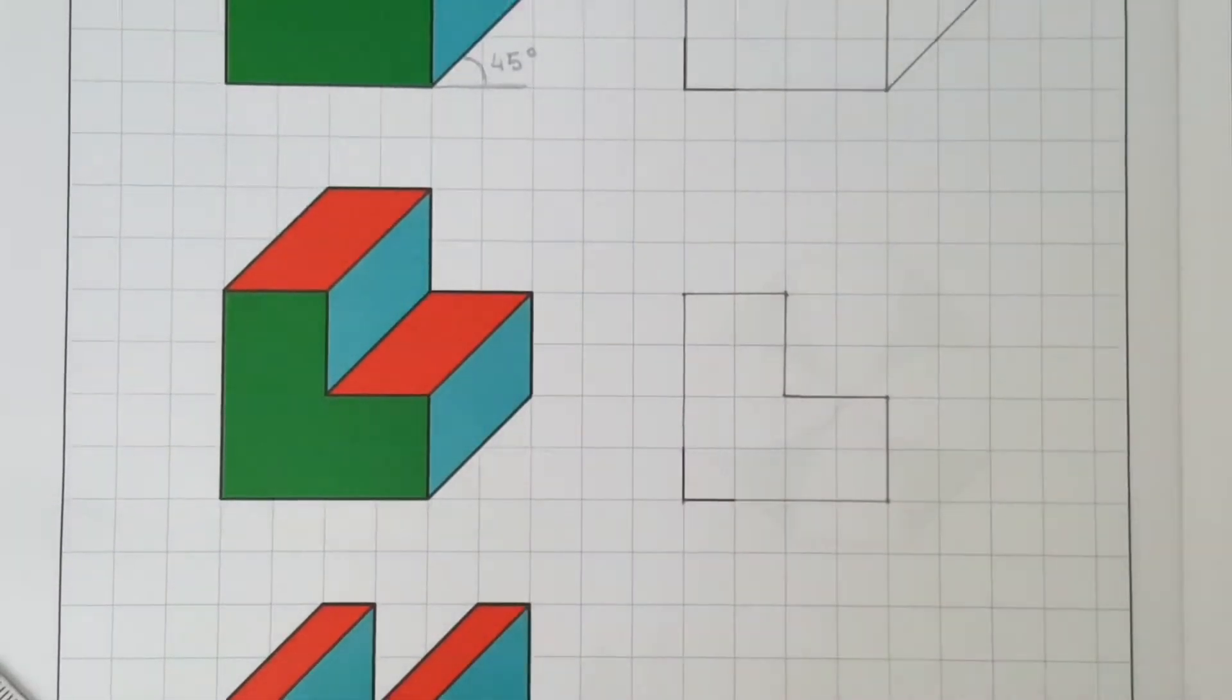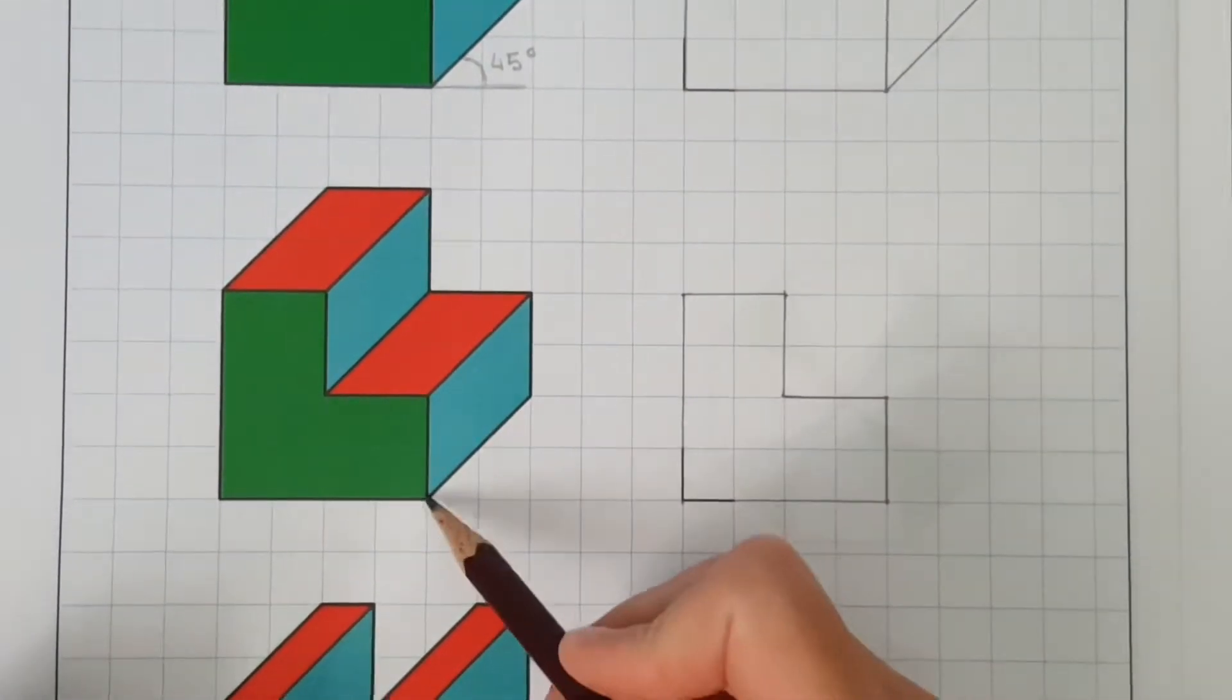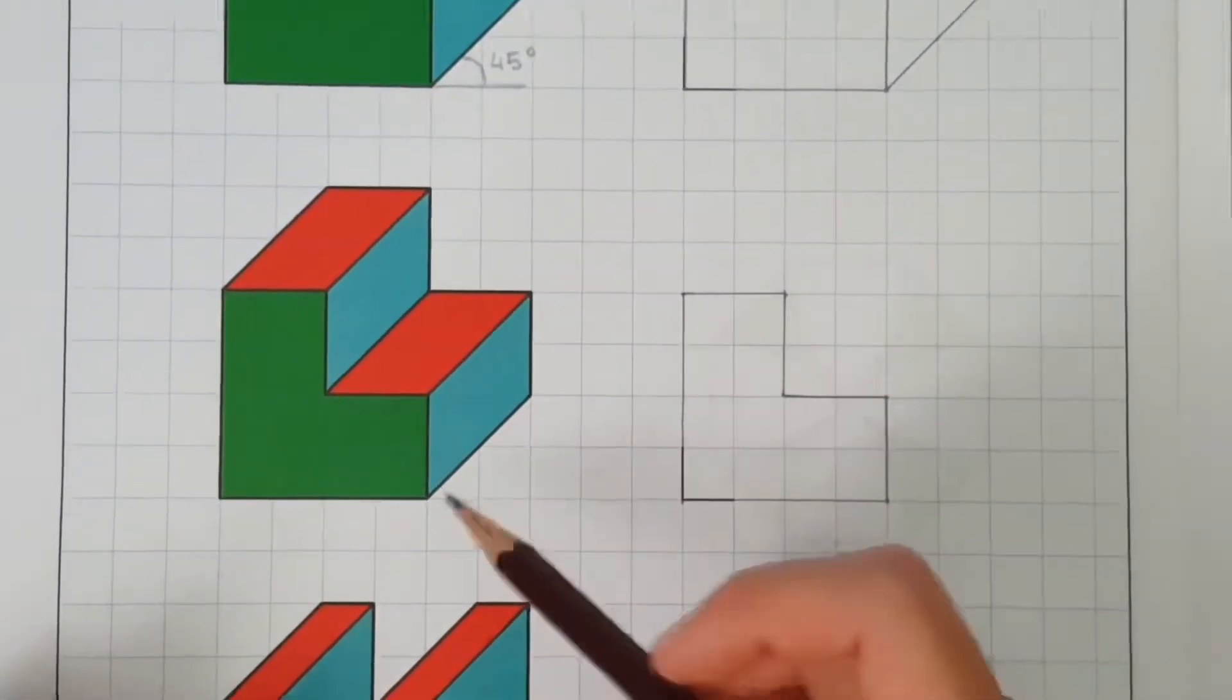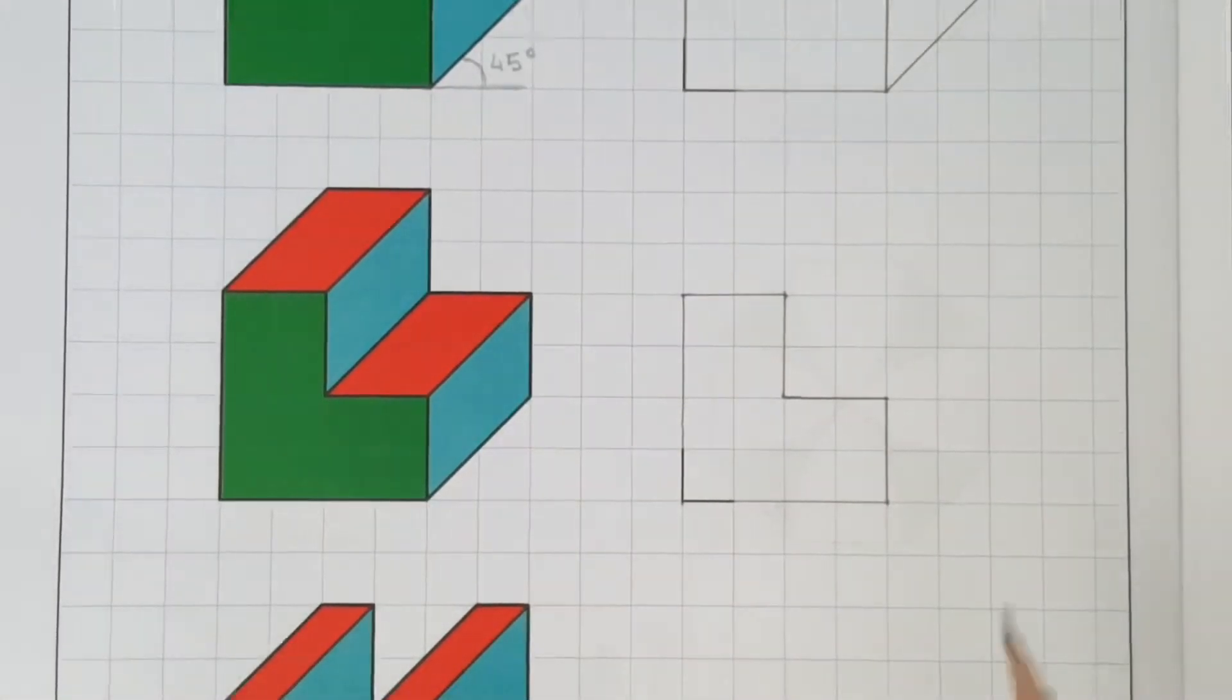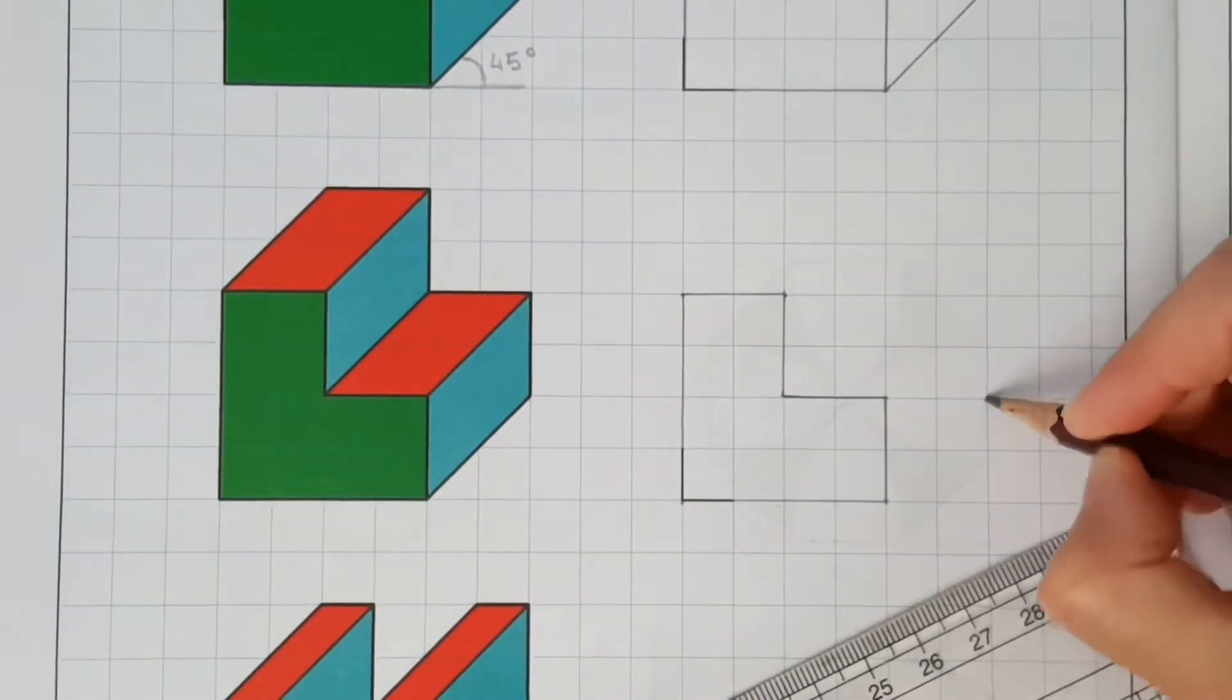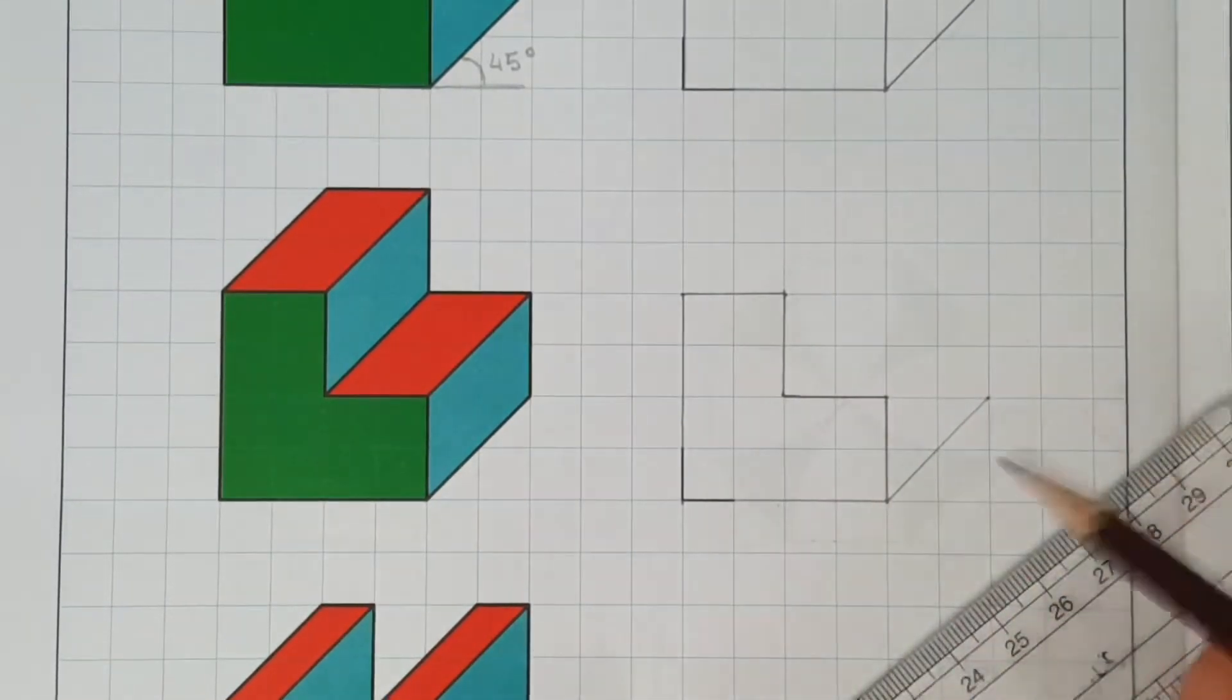Now let's move on to the lines which are at a 45 degree angle. Now this baseline right here is 2 diagonal squares up. Of course, you have to go up but to the right side. So there you go, 2 squares to the right, and then draw a light construction line.